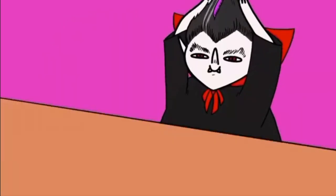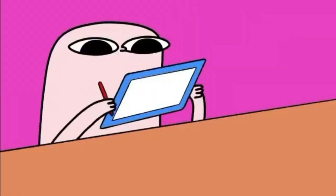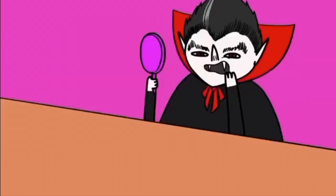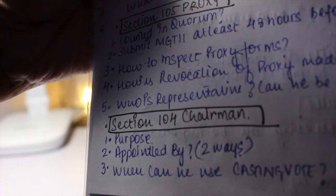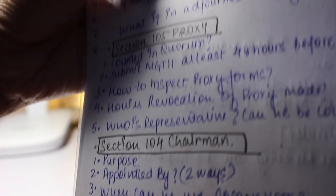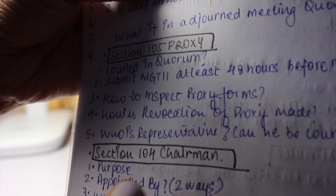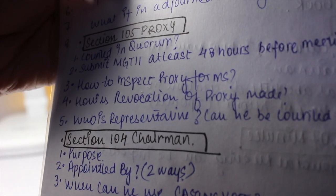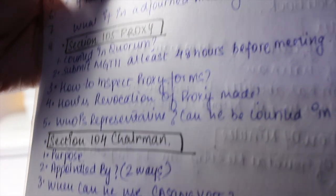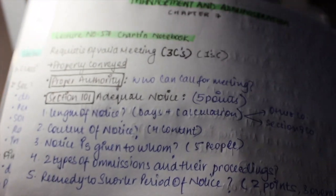Whenever I read these questions, I have a picture in my mind and it helps me in recalling those subsections and sections. You will see one more thing: in section number 104, chairman appointed by, I have written appointed by and I've written two ways. It's important to write the number of points for that specific question so that you recall the correct amount of points and you do not miss out on anything.